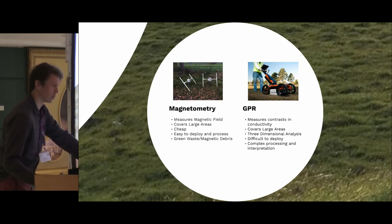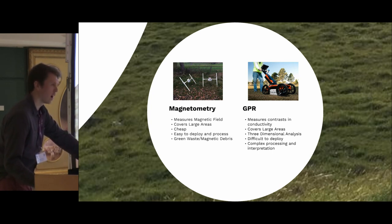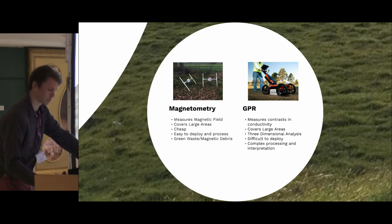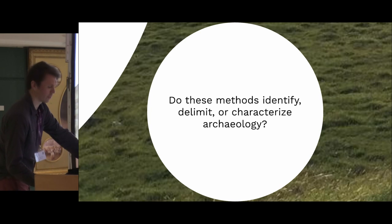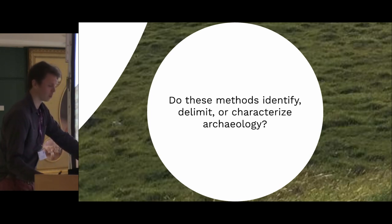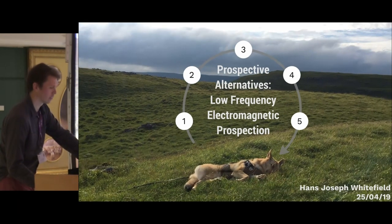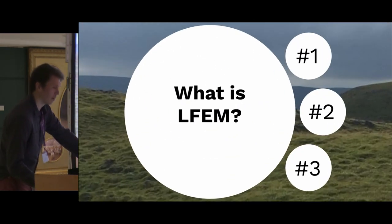Magnetometry is of course the real culprit here — it's cheap as chips so everyone uses it, but that doesn't mean it's necessarily the best. It can be hampered by increasing amounts of green waste, as well as random magnetic debris like bits off tractors. GPR, as Neil just explained, is actually improving rapidly, though the only drawback is it's quite expensive. So are these two methods really answering our questions? Are we learning about the delimitations of archaeological sites, characterizing them, or just identifying them? I think most of the time we never get past that phase one survey. We're mainly anomaly hunters when doing our magnetometry. So how can we improve that? We have to look at alternative methods — in this case, electromagnetic survey.